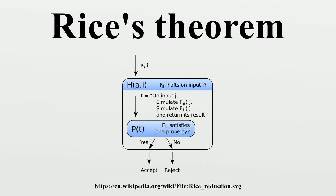Formal statement: Let φ be an admissible numbering of the computable functions, a map from the natural numbers to the class of unary computable functions. We identify each property that a computable function may have with the subset consisting of the functions with that property. Thus, given a set, a computable function has property F if and only if for each property there is an associated decision problem. Rice's theorem states that the decision problem is decidable if and only if the set is trivial.